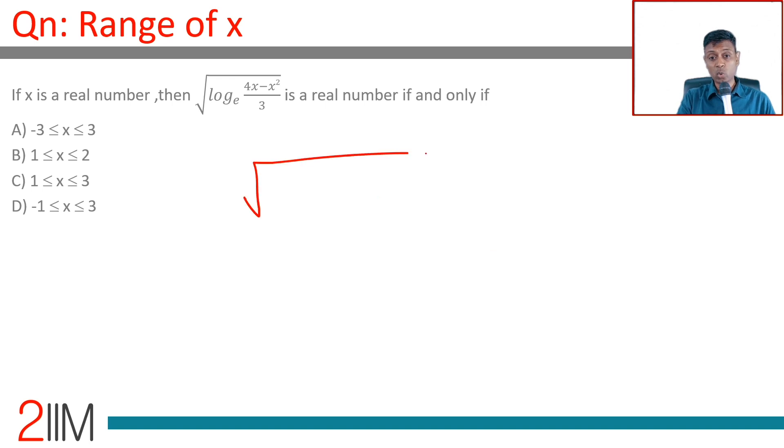If x is a real number, then √(log_e((4x - x²)/3)) is a real number if and only if... For the square root of a number, we know straight away that log_e((4x - x²)/3) should be greater than or equal to 0.